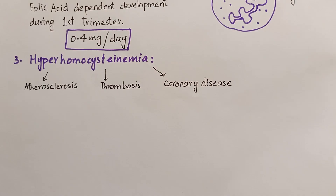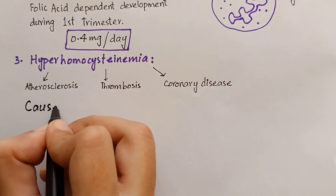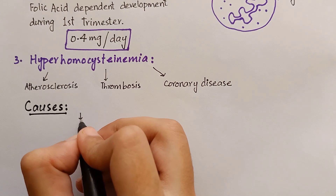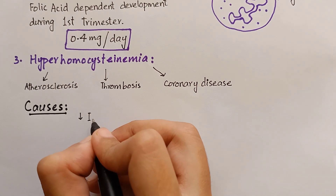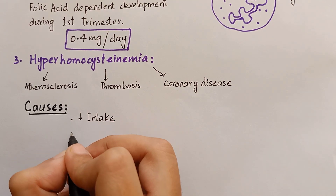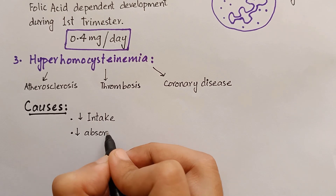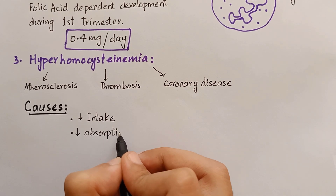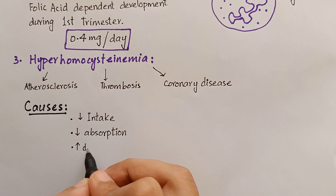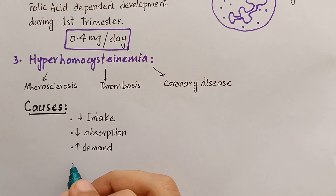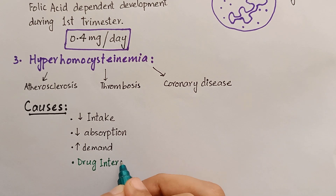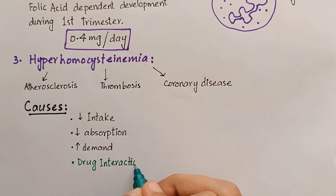The deficiency of folic acid can be caused by a number of factors: inadequate dietary intake, defective absorption caused by a pathology in the small intestine, increased demand — for example, in pregnancy and lactation — or drugs that are folic acid antagonists.